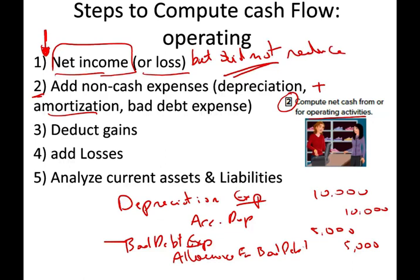We start with net income and add back non-cash expenses because those expenses reduced net income but did not reduce cash. All we're looking for is cash — not accrual net income. Then sub-step three: deduct gains.